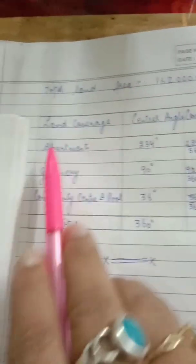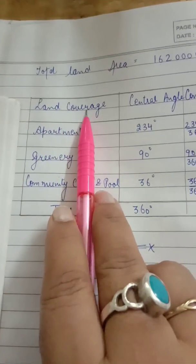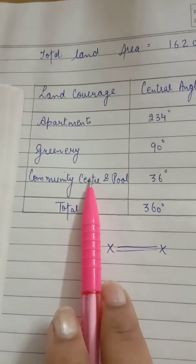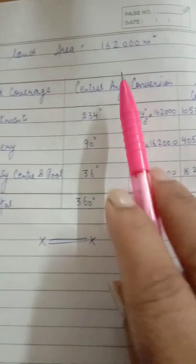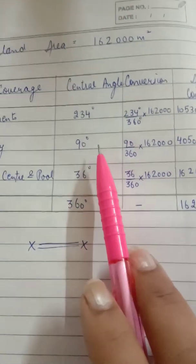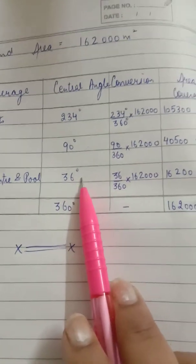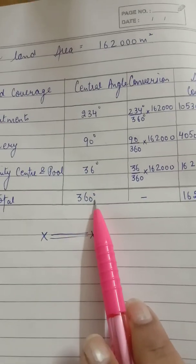The land coverage - land coverage means what all things are there on the land. We have apartments, we have greenery, and we have community center and pool. The central angle is 234 degrees first, 90 degrees for the second, 36 degrees for the third, and the total of the degree is 360 degrees.